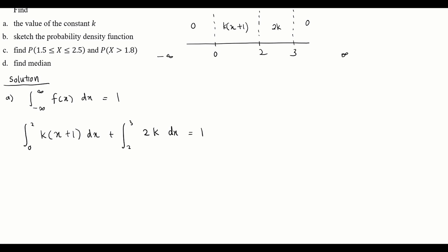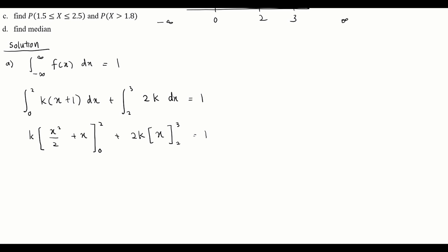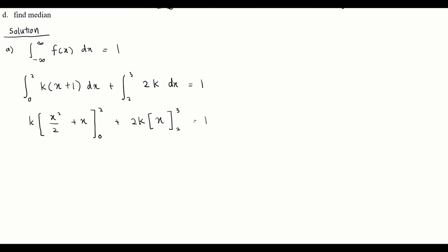Since k is a constant we bring it outside the integral. Integrating x gives x²/2, integrating 1 gives x, with limits 0 to 2. For the second part, 2k is a constant brought outside, integrating 1 gives x with limits 2 to 3. The total must equal 1.